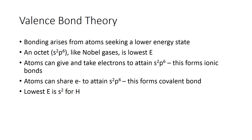Noble gases are very low in energy and totally unreactive. All of them have an s2p6 arrangement, except for helium. All atoms react in order to achieve this s2p6 arrangement because it gives them lower energy. They achieve it either by giving and taking electrons to form ionic bonds, or by sharing electrons to form covalent bonds.